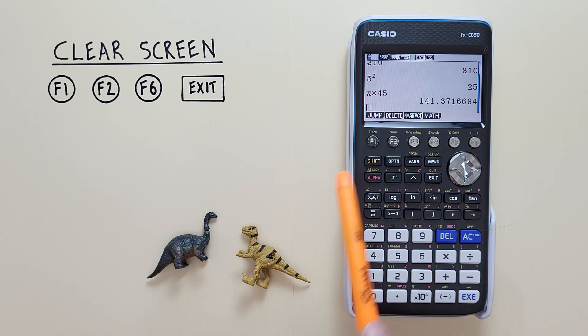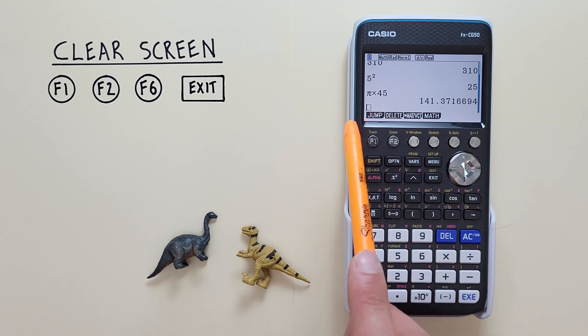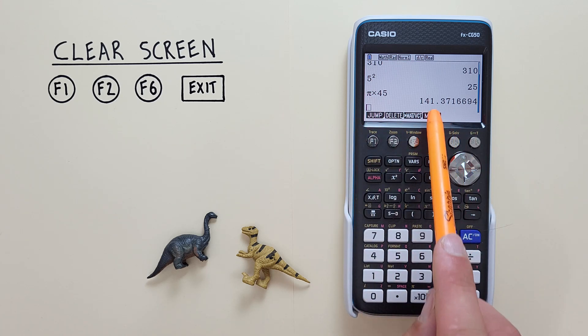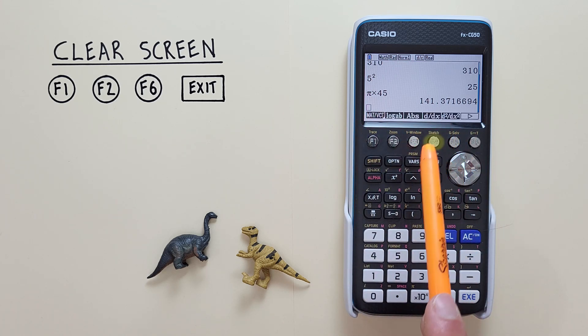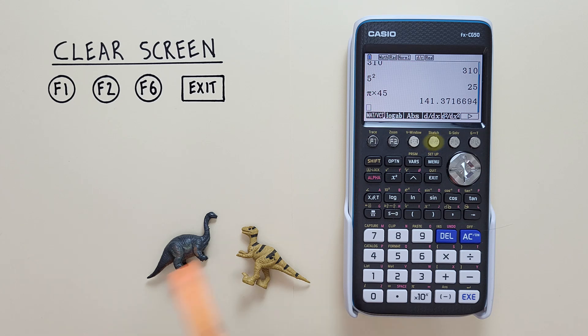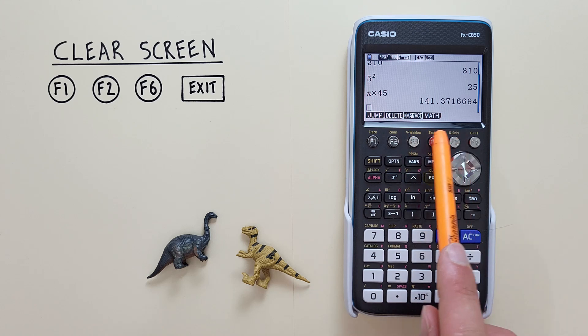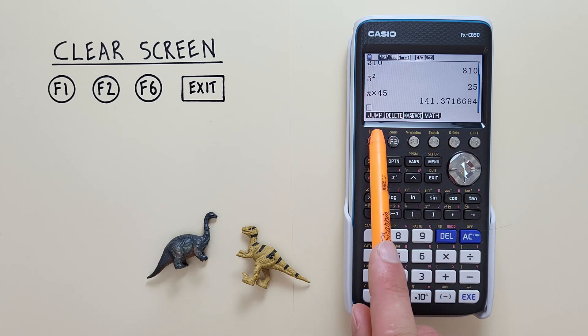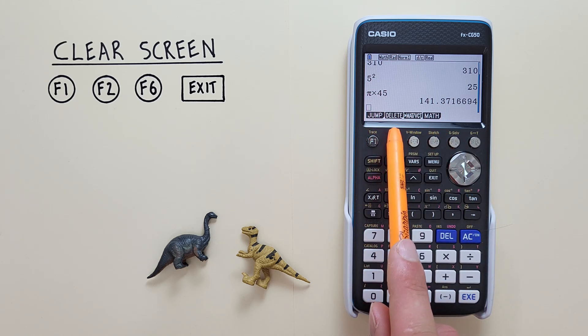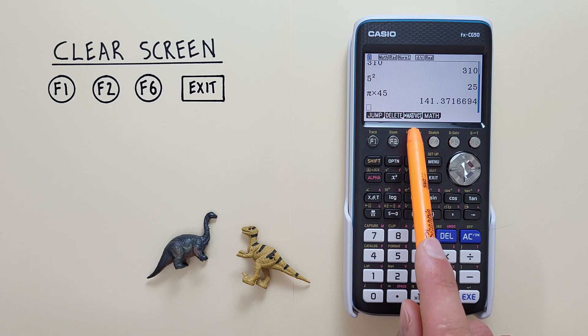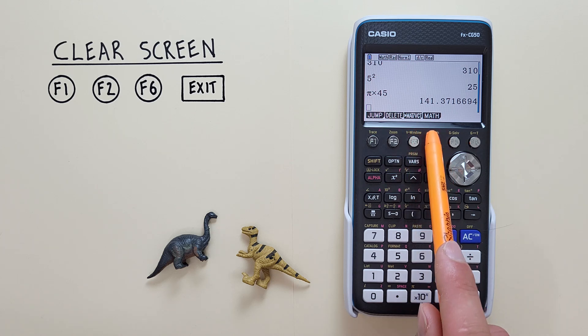To do that, we need to be in the main run menu. If you're in a different menu, like the math menu, you can get back to the main screen menu by pressing the exit key until you get back to this screen, where you see jump, delete, mat slash vct, and math at the bottom.